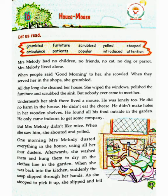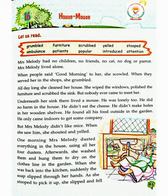When people said good morning to her, she scowled. When they served her in the shops, she grumbled. She wiped the windows, polished the furniture and scrubbed the sink. Vahe khidkiyon ko ponchhti thi, furniture ko polish karti aur sink ko saaf karti. But nobody ever came to meet her. Parantu kabhi bhi koi unse milne nahi aata.